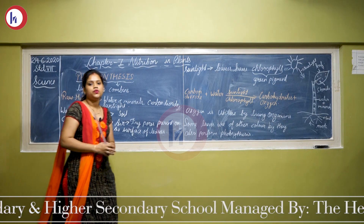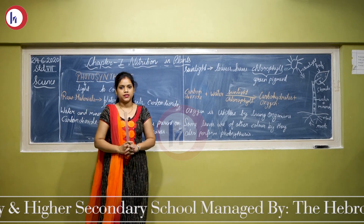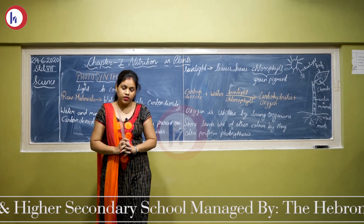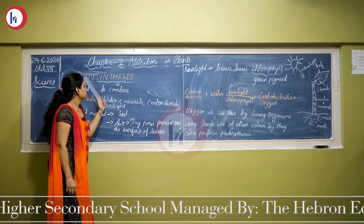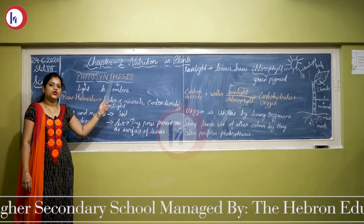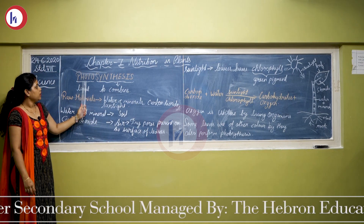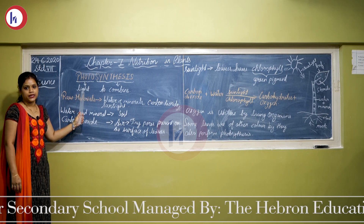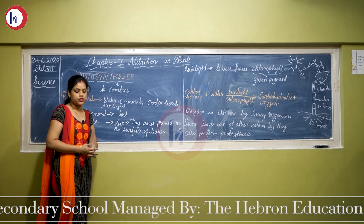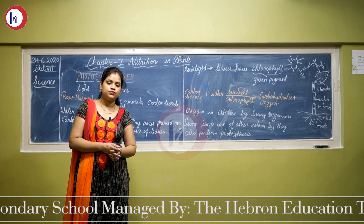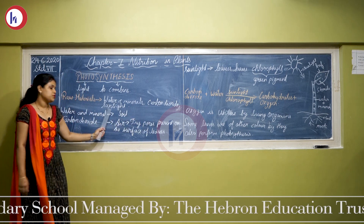As soon as we hear the word autotrophic or autotrophs, the first thing that comes to mind are plants. Plants are the producers, meaning they produce food. How do they produce food? They produce food with the help of photosynthesis. Now what does photosynthesis mean? Photo means light and synthesis means to combine. Plants need raw materials to produce their food. These raw materials are water and minerals, carbon dioxide, and sunlight.